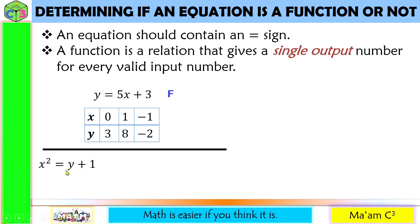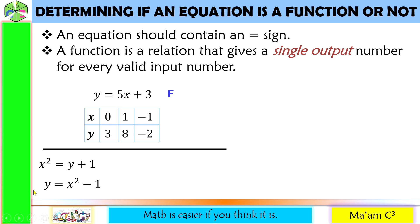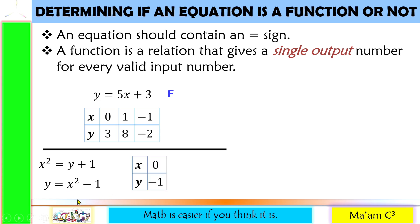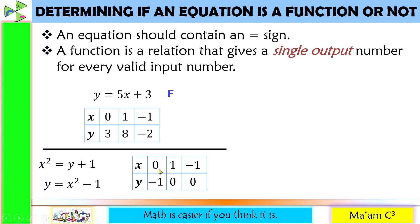Let's have another one: x squared is equal to y plus 1. Let us isolate y — moving 1 to the other side gives us y is equal to x squared minus 1. Our y is already defined. We have an equal sign and two variables. Substituting 0: 0 squared is 0, and 0 minus 1 is negative 1. Trying positive 1: 1 squared is 1, and 1 minus 1 is 0. Trying negative 1: negative 1 squared is 1, and 1 minus 1 is also 0. For the table of values, we look at the x values — none are repeated. Therefore, this equation is a function.